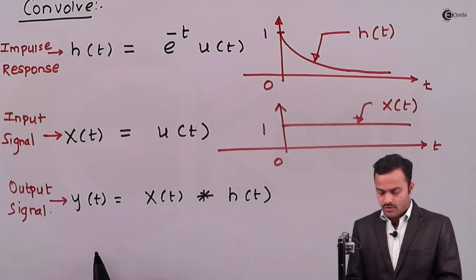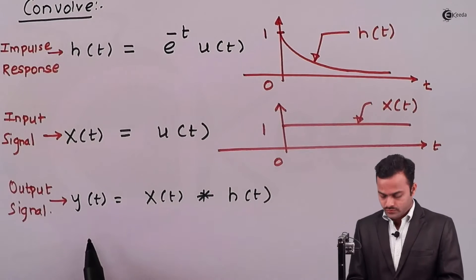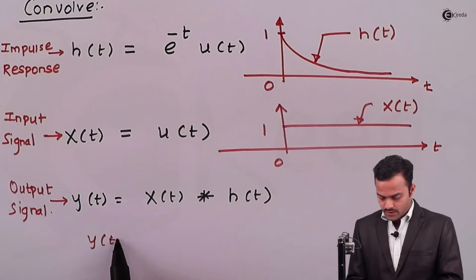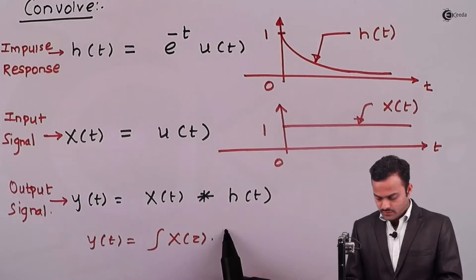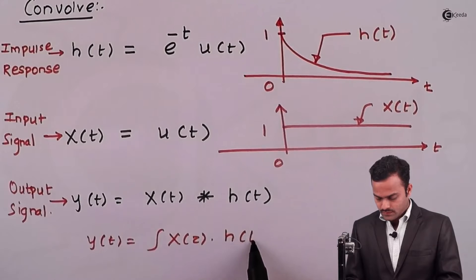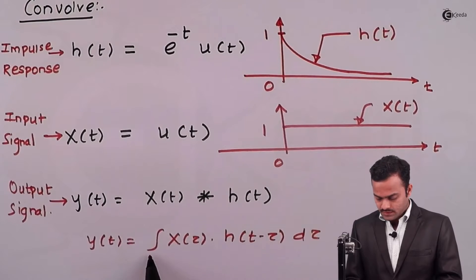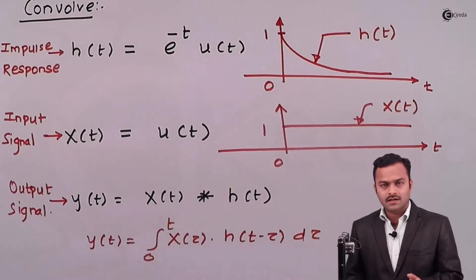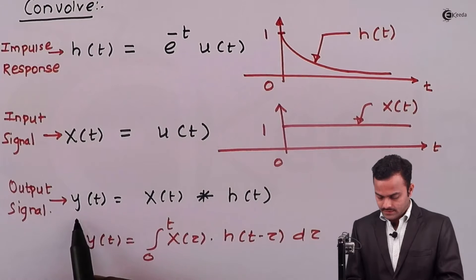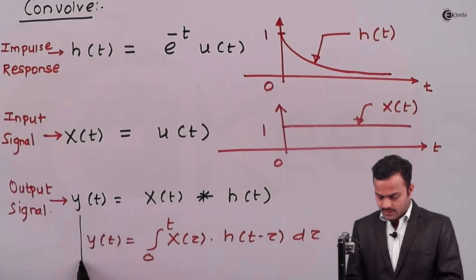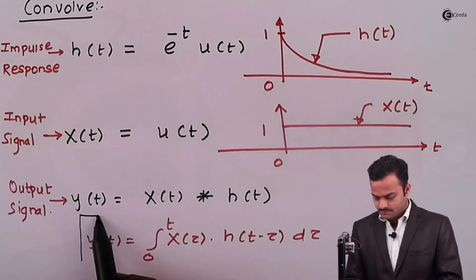The formula we are going to use is: y(t) = integral of x(tau) * h(t - tau) d tau. The limits will be from zero to t, decided in the end by the area which is common between the two signals.